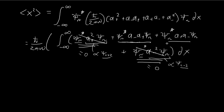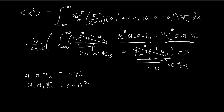Now we focus on the two middle terms. To deal with them, we use a result derived earlier: a+a- ψ_n = n ψ_n, and a-a+ ψ_n = (n+1) ψ_n. This was proved earlier in the derivation of the properties of the harmonic oscillator. We can substitute these results directly into the integrals.